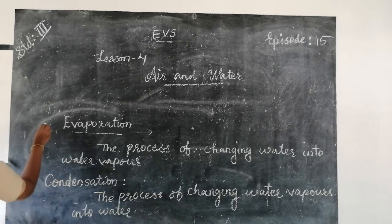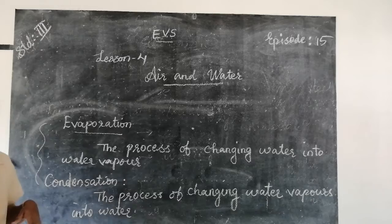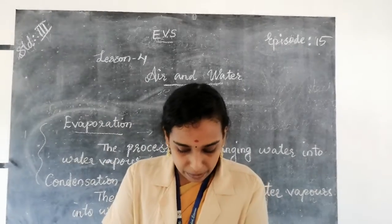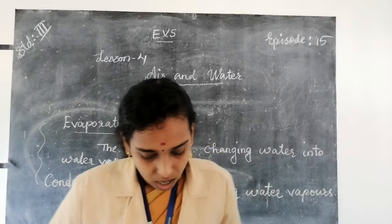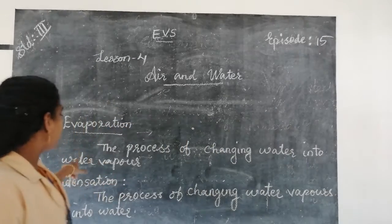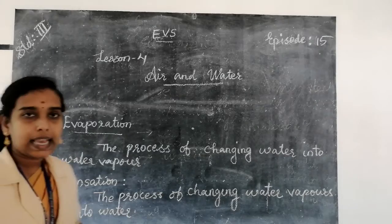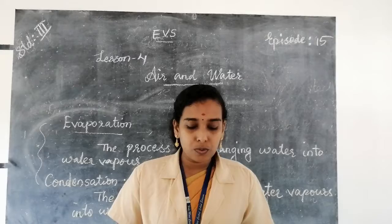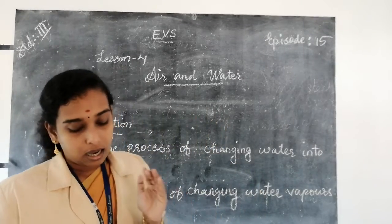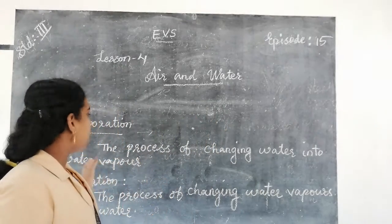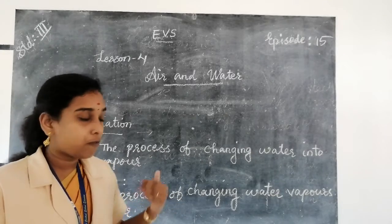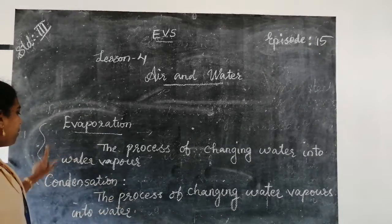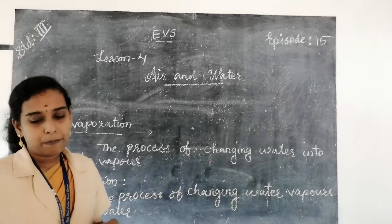These are the important processes in the water cycle. The third one is precipitation. Precipitation means the tiny water droplets formed after condensation stick together and form clouds. When the water droplets get too heavy for the clouds to hold, they come down to the earth's surface in the form of rain, and this is called precipitation.